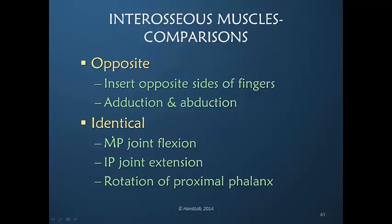I would like to stress this: the interosseous muscles are the primary metacarpophalangeal joint flexor. The metacarpophalangeal joint is primarily flexed by the interosseous muscles, with equal influence from both the dorsal and volar interosseous muscles.